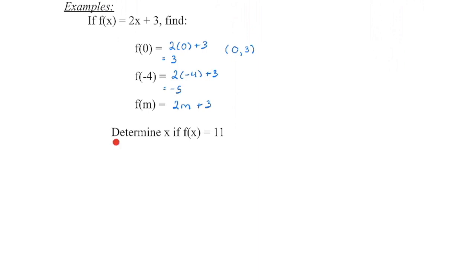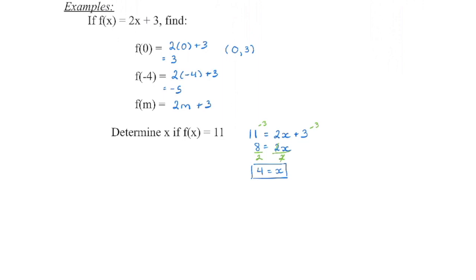Finally, if f(x) = 11, we substitute 11 in for f(x): 11 = 2x + 3. Solving this linear equation — subtract 3 from both sides: 8 = 2x, then divide by 2: x = 4. So when x is 4, the y value is 11.